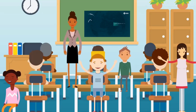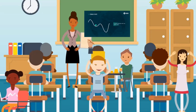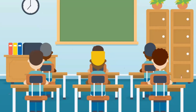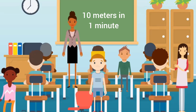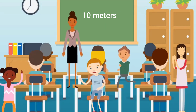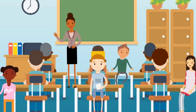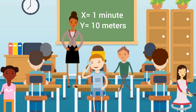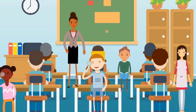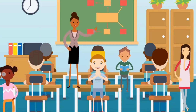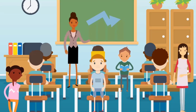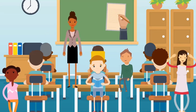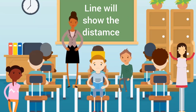Now, let's add the data points. For example, if someone walked 10 meters in 1 minute, we plot the point at 1 and 10. On the graph, the x value is 1 minute and the y value is 10 meters. Once you've plotted all the points, draw a line connecting them. The line will show how one's distance changed over time.